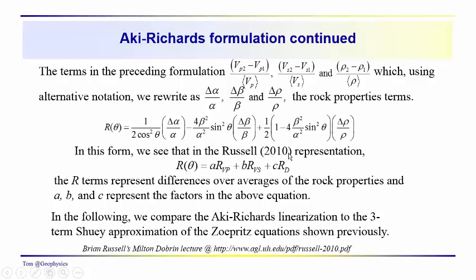Brian Russell in his 2010 Milton Dobrin lecture writes the angular dependence of reflectivity as R(θ) = A·ΔRp + B·ΔRs + C·Δρ, where A, B, and C are the factors in the equation representing differences over averages for the rock properties.